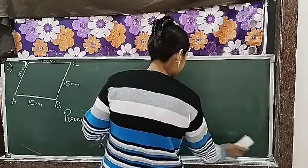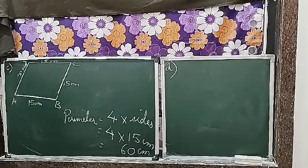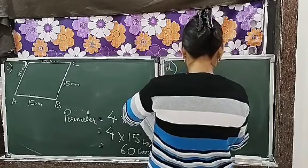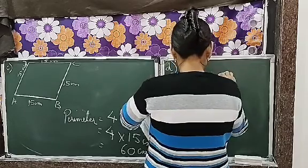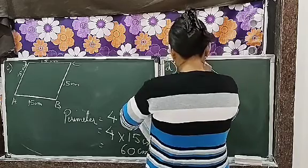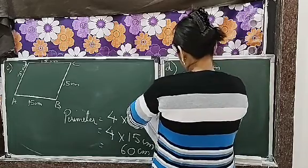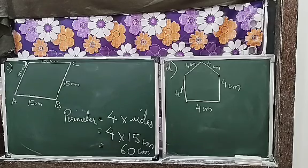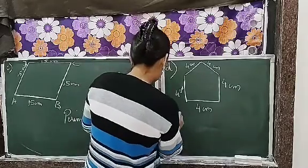Now we start D. So children, now we are going to start the D part. Again, it is a regular figure. You can see all sides are equal, correct? So the perimeter will be number of sides multiplied by sides.